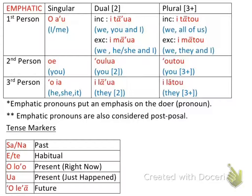The first thing I want to clarify is that emphatic pronouns put an emphasis on the doer. So if you're really wanting to put an emphasis on whoever's doing the action, then you use these kinds of pronouns. For example, let's say someone asked who took the car — you're going to be emphasizing whoever took the car. 'Mark, he took the car.' This is when you'd use these kinds of sentence structures or pronouns.